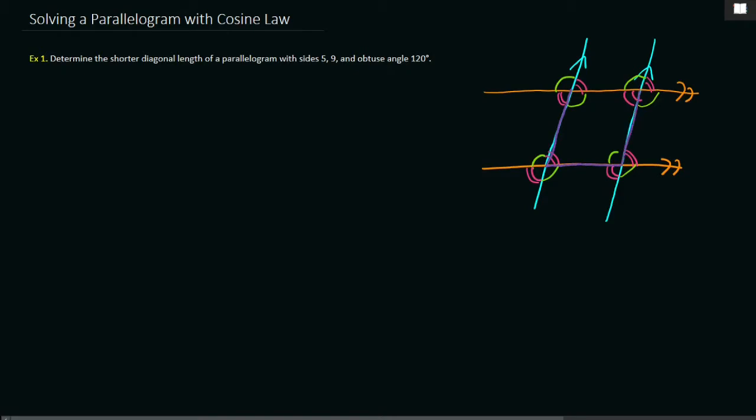And so what that means is, our pink angle and our green angle, our obtuse angle and our acute angle, they meet in a straight line. So that means that these two angles here, this pink angle plus the green angle, add up to 180 degrees. And so this means that the two angles in a parallelogram are supplementary.